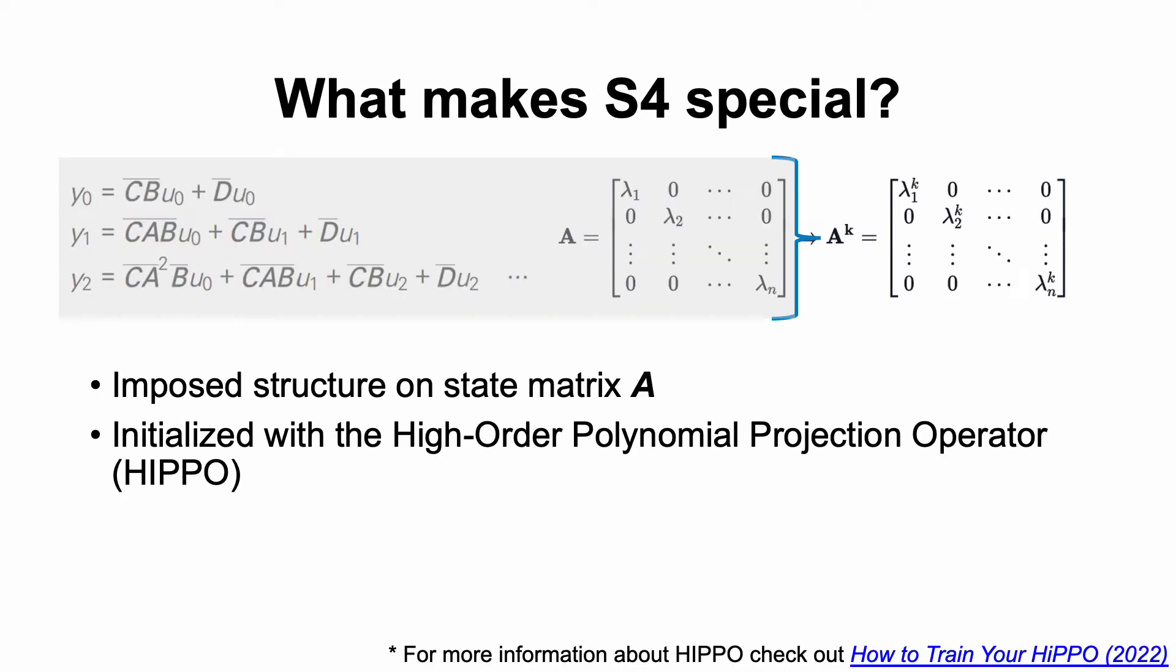And so the trick is that they actually just unrolled the RNN essentially into a really wide CNN for training. The repeated multiplication of the state matrix because of this convolutional kernel is actually really computationally expensive because you have to update the state transition matrix A every time you calculate the next y or the next output, right? So what S4 did is that it imposed a structure on state matrix A, making it more diagonal, which actually reduced the complexity of all of those operations. It did this with the high order polynomial projection operator or HIPPO. I won't go into HIPPO, but if you want to learn more about HIPPO, you can check out this paper called How to Train Your HIPPO.